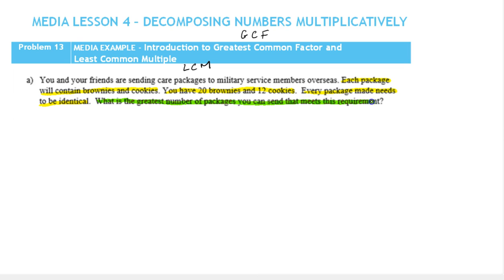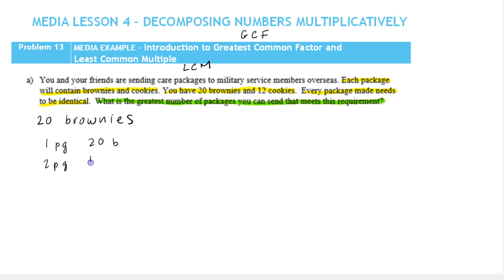Let's think about this in terms of how we can break up the brownies. There are 20 brownies. We could have one package with 20 brownies in it, two packages with 10 brownies in them. Notice we can't have three packages because we'd have to break up a brownie — 20 is not divisible by 3. We could have four packages with five brownies each, or five packages.